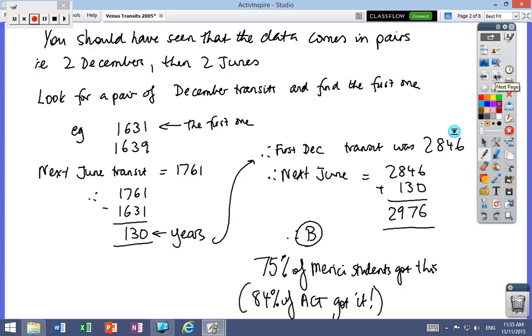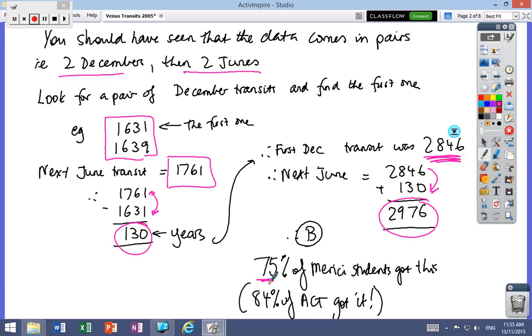You should have seen that the data comes in pairs—two Decembers and then two Junes. If you look at any particular pair of Decembers, for instance the first one, the next June transit will be 1761. The difference between those two numbers is 130 years. So if the first December transit was 2846 and you add 130 years, you get 2976. That was one of the distractors and Marucci students did well—three quarters got it right.